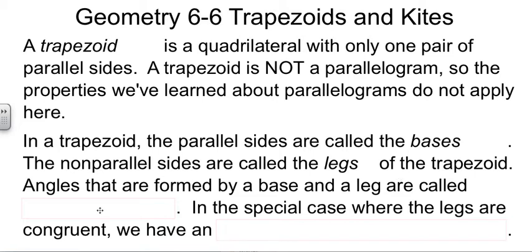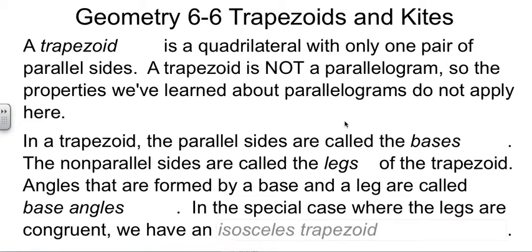And when you have a base and a leg come together, those are called the base angles. And in the special situation where the legs are congruent, what we have is called an isosceles trapezoid. When the two legs are equal. They're not always equal, but when they are, we get some useful stuff.